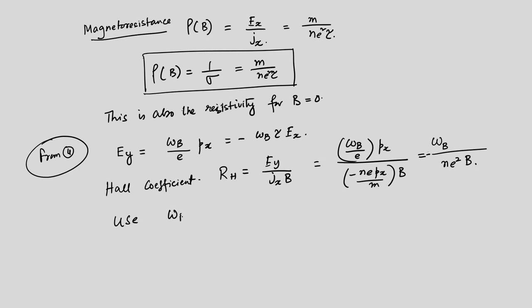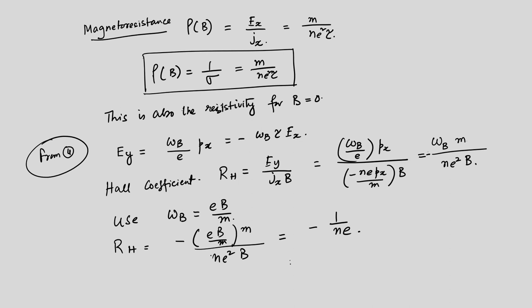The Hall coefficient is a constant and does not depend on B, for the same reason that at equilibrium the effect of the magnetic field does not enter. This is what one learns in the classical Hall effect. We are doing this because we will be introducing the quantum Hall effect, and at several places we will fall back on the classical version to show how it differs.